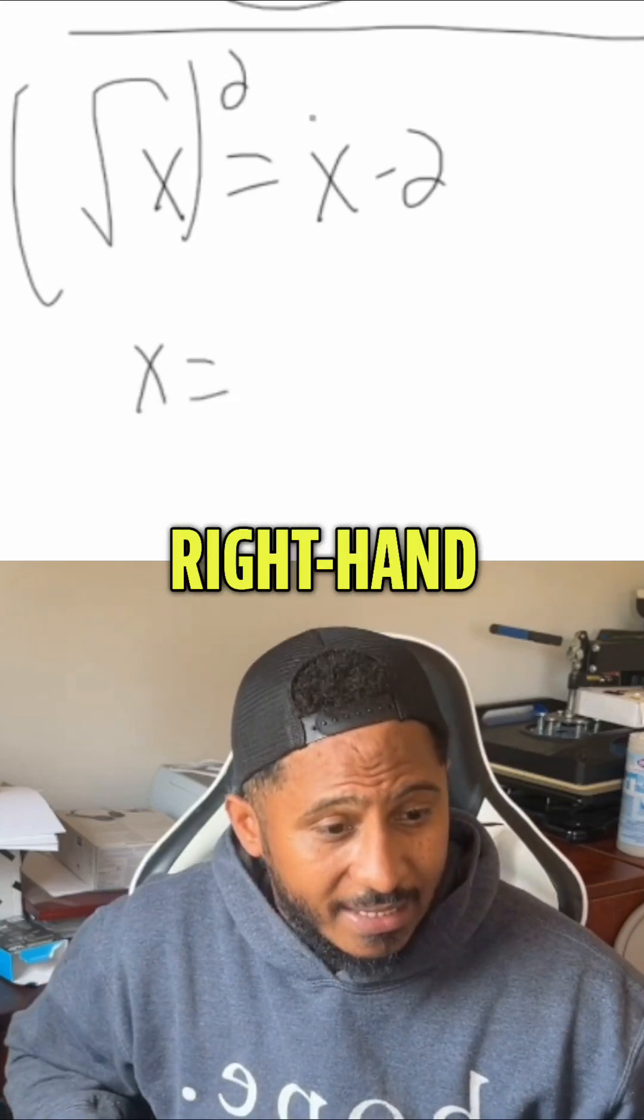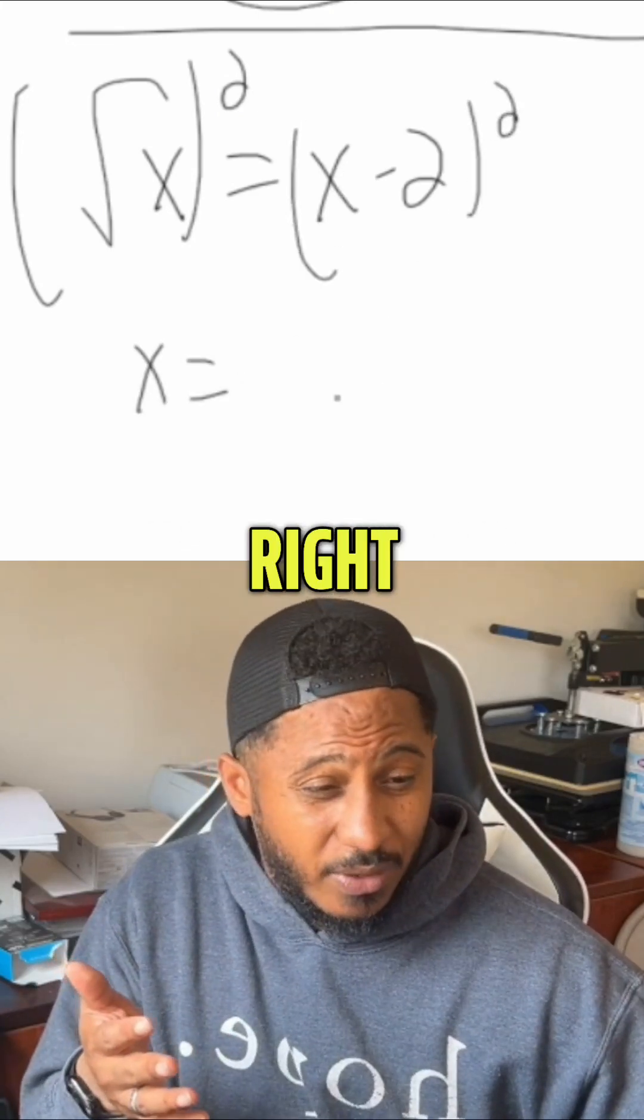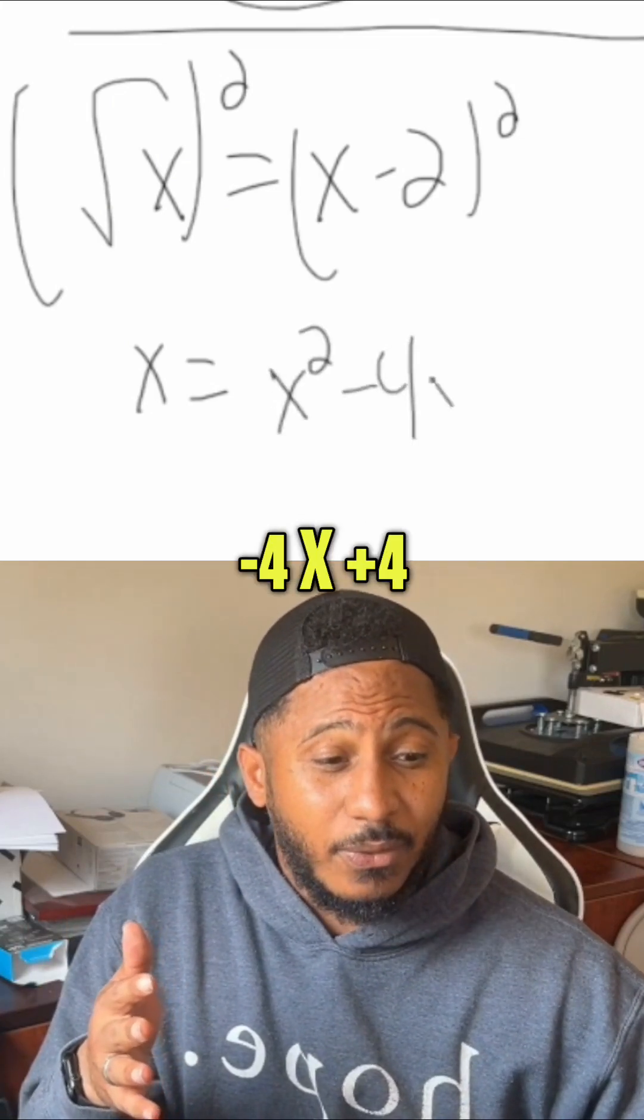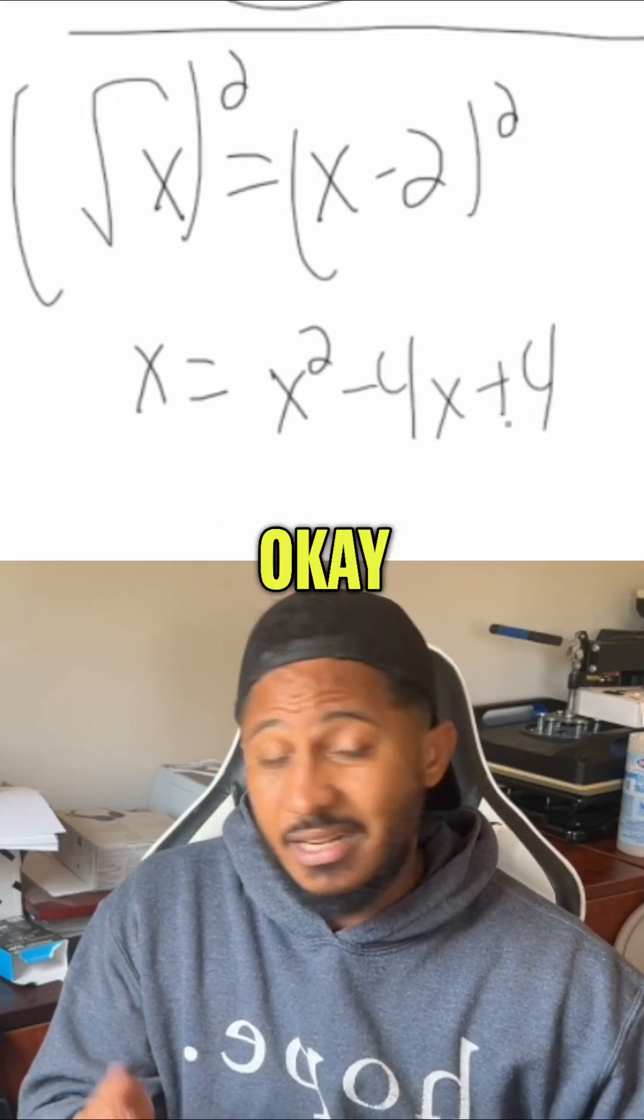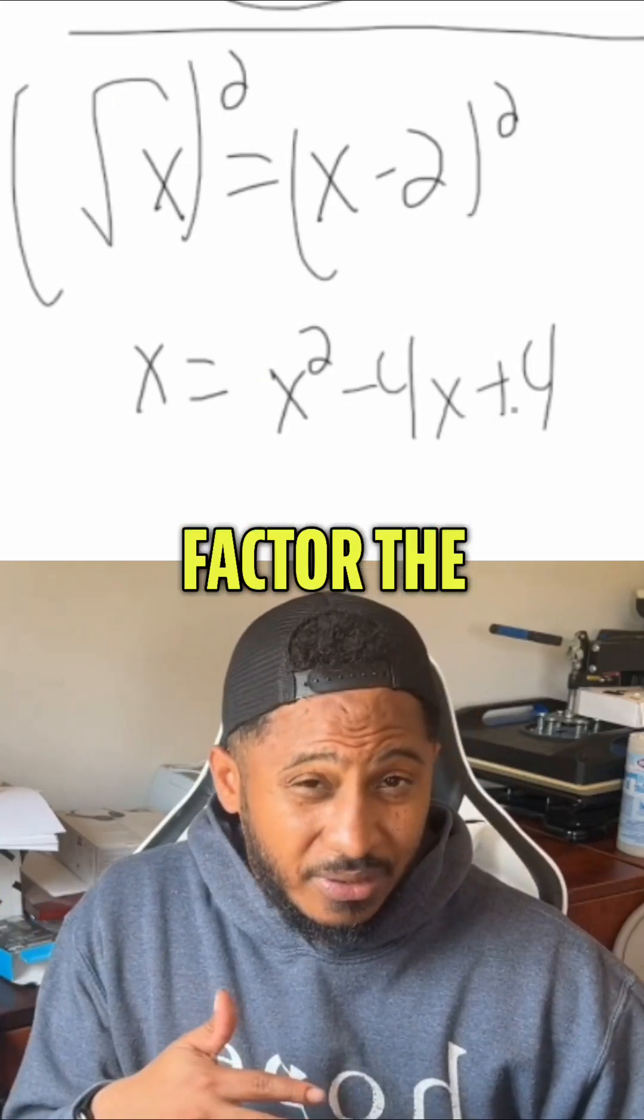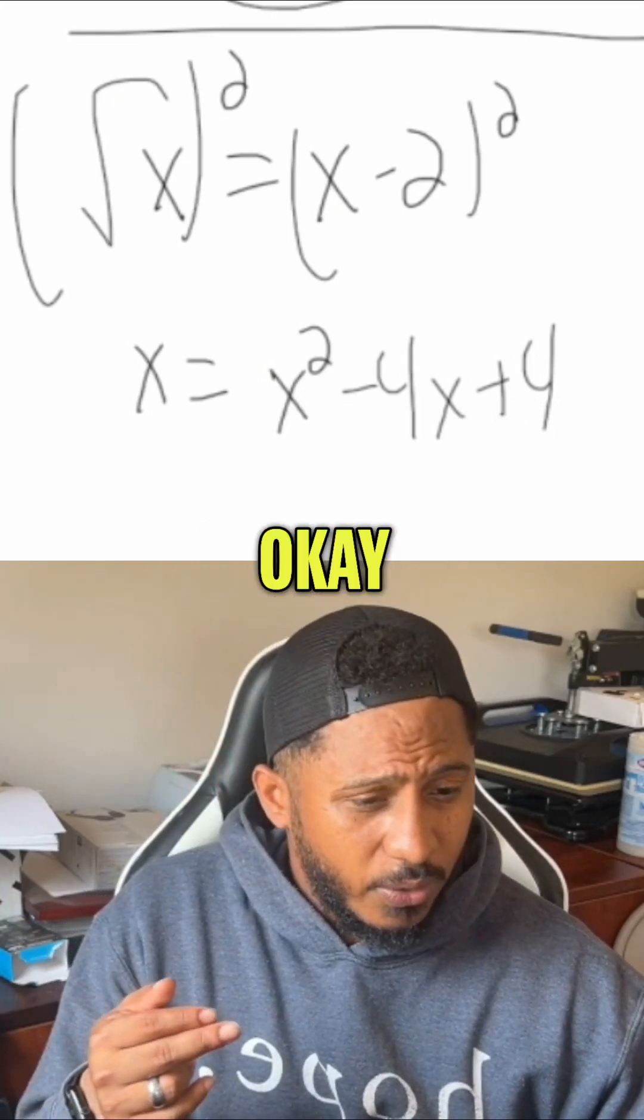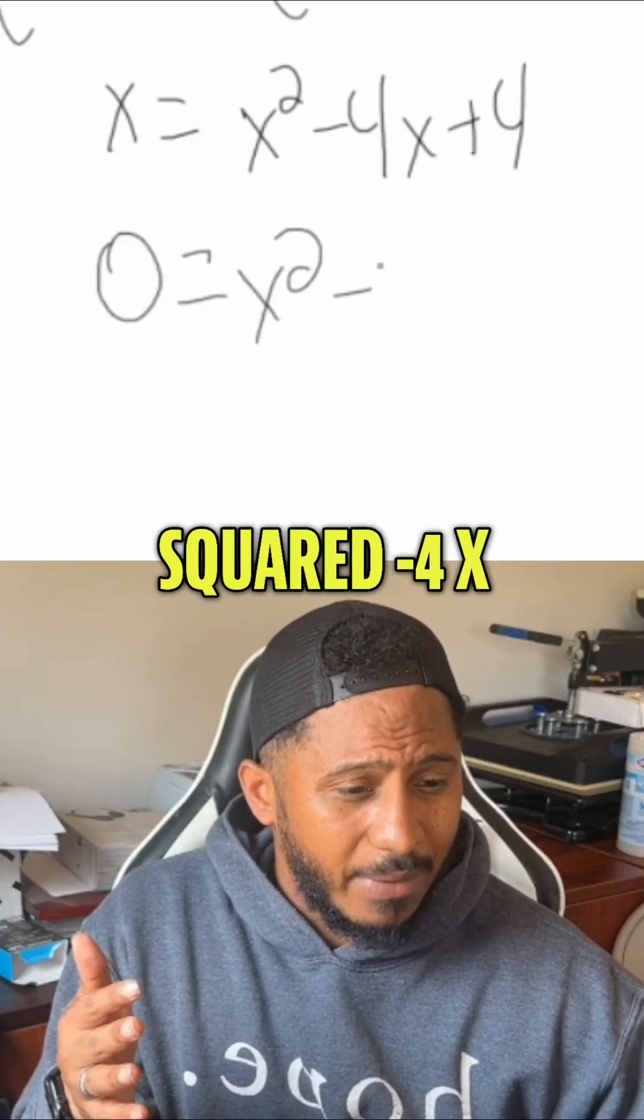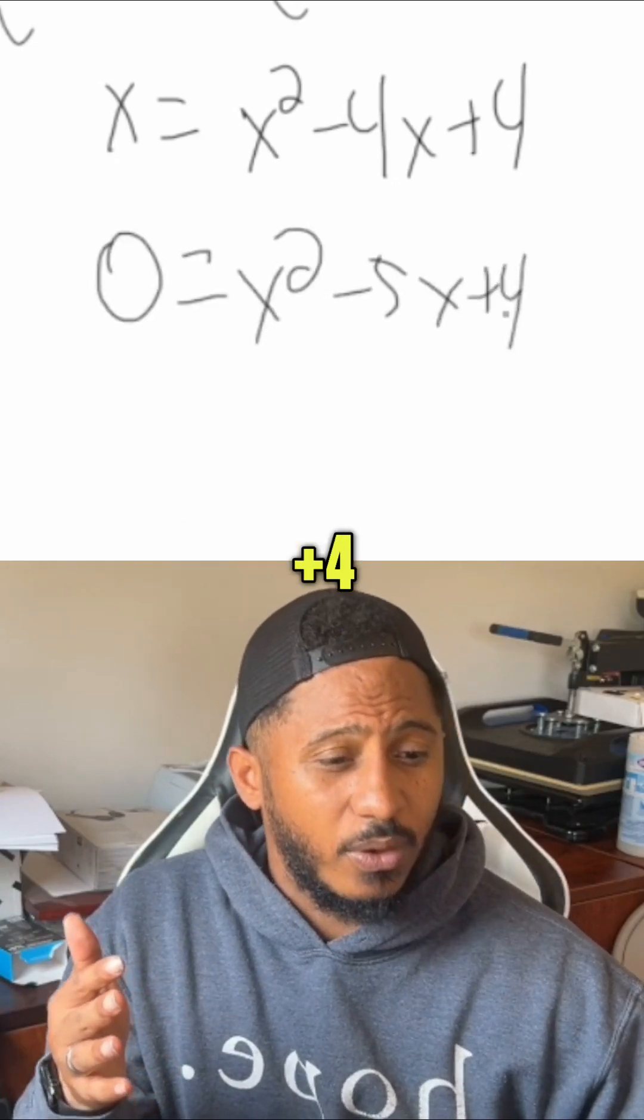Squaring this right-hand side, we're squaring the whole side, which means we have to multiply this out. We end up with x squared minus 4x plus 4. Now it's a quadratic equation. We get 0 on one side, factor the other side or use the quadratic formula. Here, I can get 0 on one side by subtracting x, so 0 equals x squared minus 4x plus 4.